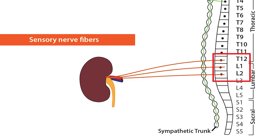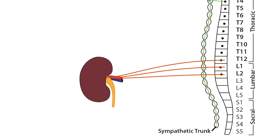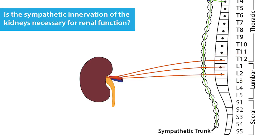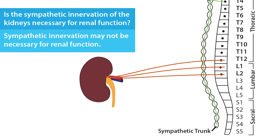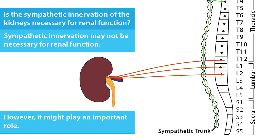Is the sympathetic innervation of the kidneys necessary for renal function? Since transplanted kidneys are not innervated and they function well enough, it suggests that sympathetic innervation is not necessary for renal function. However, it does not suggest that the sympathetic innervation cannot play an important role in renal function, since overactivation of the sympathetic pathway is thought to contribute towards hypertension.